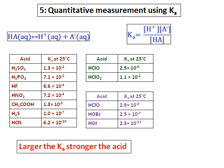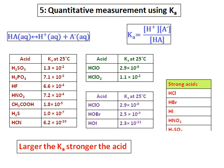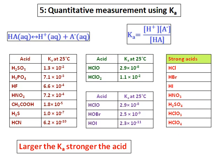This is all for weak acids. For strong acids, there are 7 of them: HCl, HBr, HI, HNO₃, sulfuric acid, HClO₃, and HClO₄. These strong acids ionize completely, so there is no equilibrium and we don't have a Ka value for them.